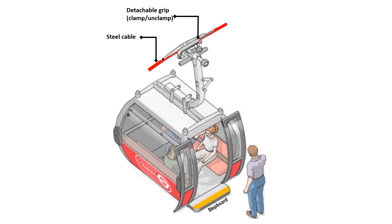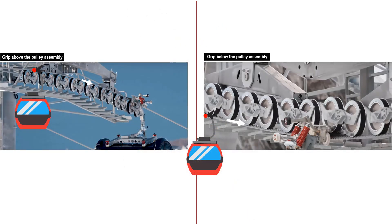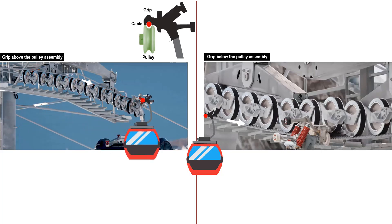First, we will look into the details of a detachable aerial cable car. These are the main parts of the cabin showing the detachable grip. In every tower, there is a pulley assembly which is composed of a series of pulleys beside each other. This is where the cable with an attached cabin passes through. When a cabin passes a tower, the grip carrying the cabin can be above the pulley assembly. In this case, the cable represented by the red dot will be between the grip and the pulley.